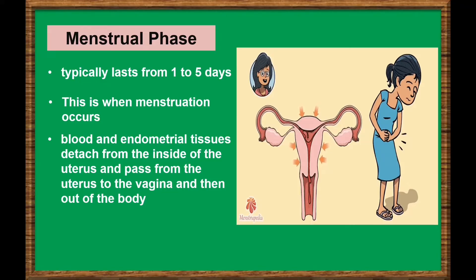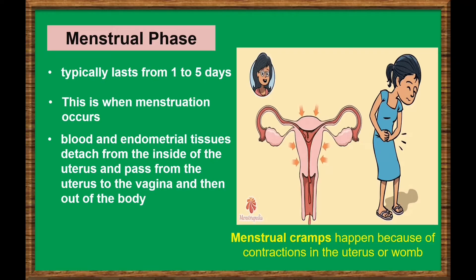Gradually, blood and endometrial tissues detach from the inside of the uterus and pass from the uterus to the vagina, and then out of the body. This is also the phase where most girls experience menstrual cramps, or the contractions of the uterus or the womb.